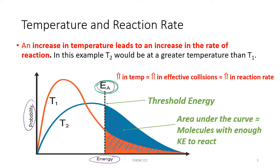So at a higher temperature, you have a greater amount of kinetic energy in your system, and you have more molecules that can actually exceed that threshold energy, which is the activation energy, and have enough energy to have an effective collision. The greater number of effective collisions there are, the greater the rate of the reaction will be.